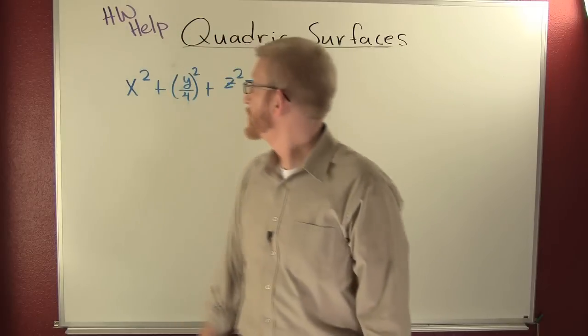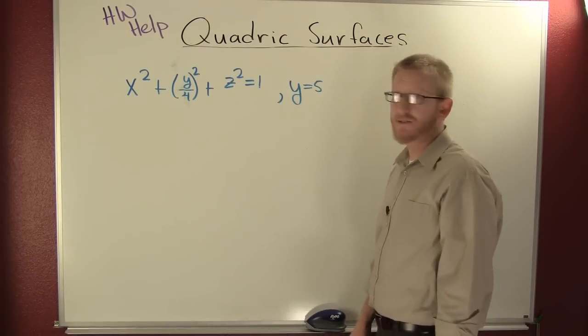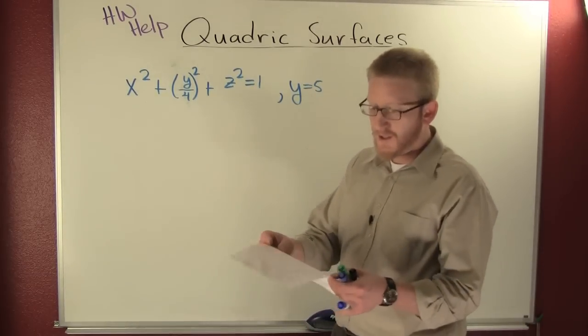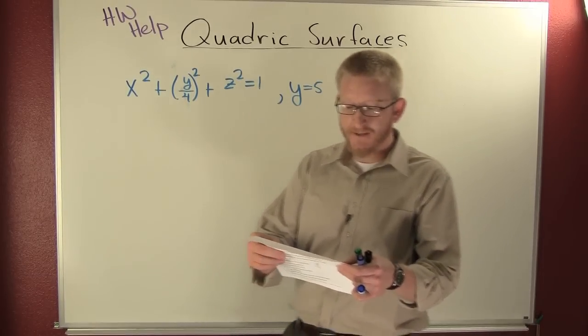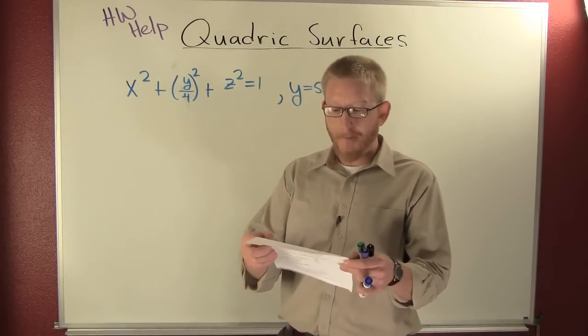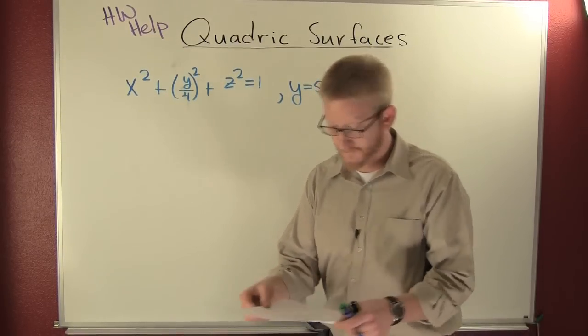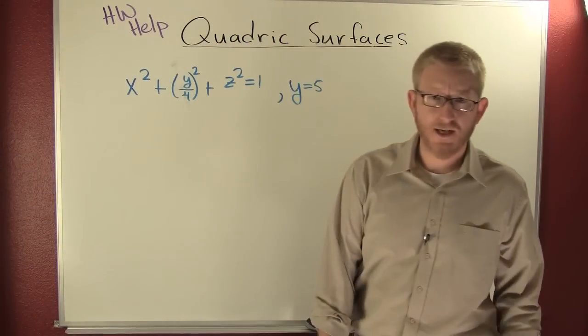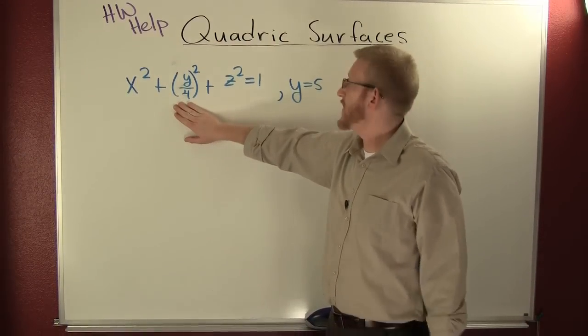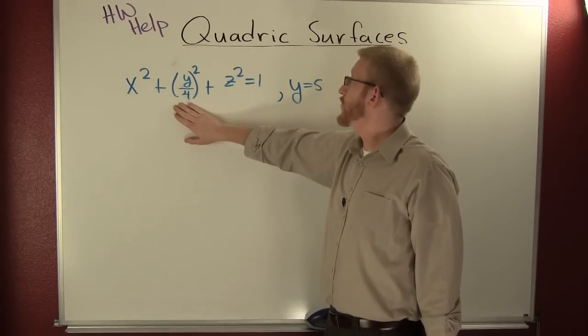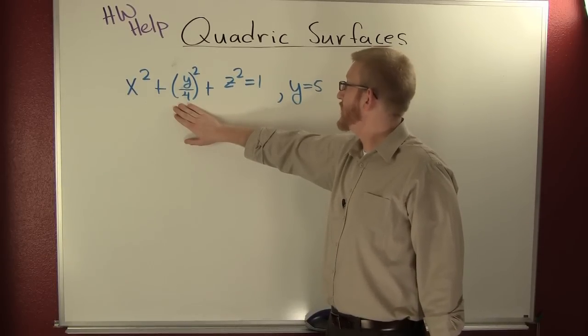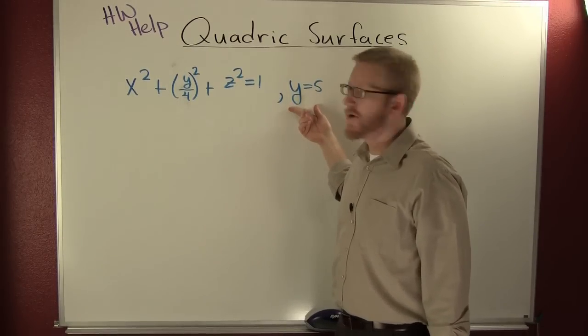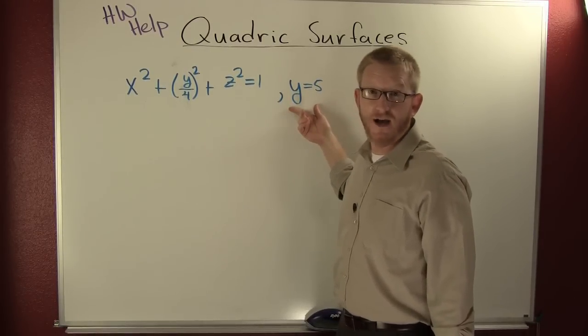So some of your homework asks you about traces. In this particular problem, let's state the type of quadric surface and describe the trace obtained by intersecting with the given plane. The equation of the surface they give us this time is x squared plus y over 4 squared plus z squared equals 1, and they want to know what the intersection with the plane y equals 5 is going to look like.